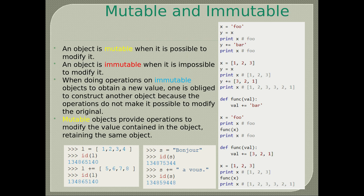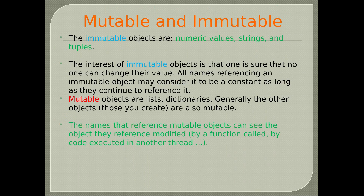Mutable objects provide operations to modify the value contained in the object while retaining the same object. In the bottom left example, the variable is immutable — even if you change the value, its id remains the same. While in the bottom right they are immutable — when you add text to the string, its id changes. The immutable objects are numeric values, strings, and tuples. The interest of immutable objects is that one is sure that no one can change their value.